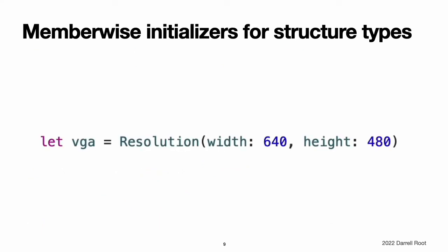MemberWise initializers for structure types. All structures have an automatically generated MemberWise initializer, which you can use to initialize the member properties of new structure instances. Initial values for the properties of the new instance can be passed to the MemberWise initializer by name. Unlike structures, class instances do not receive a default MemberWise initializer. Initializers are described in more detail in initialization.